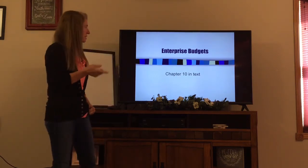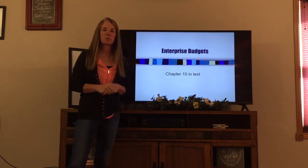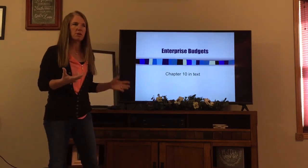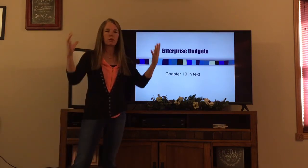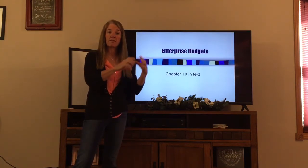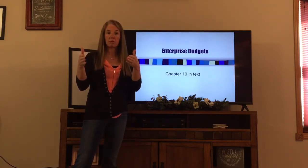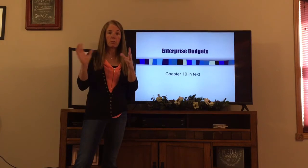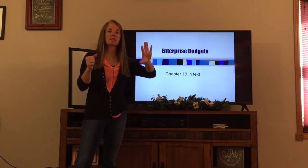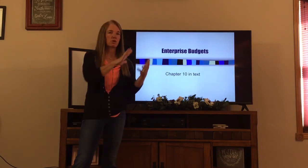As we get started, our new topic after finishing all of our production economics things before the midterm is going to be what we call enterprise budgets. So far we've looked at our whole farm situation — the assets and liabilities we have and how much equity we have, which was on our balance sheet. We also talked about what an income statement looks like for our farm, where you list all the revenue for the entire farm and all the expenses for the entire farm to find our net farm income.